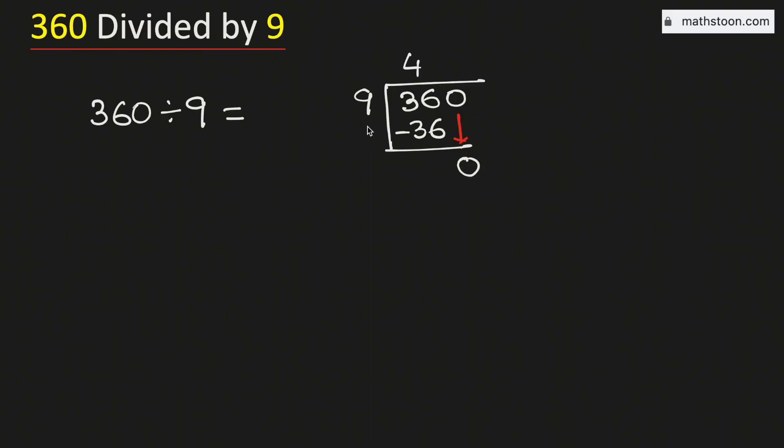But in this case, although 0 is less than 9, as we have brought down this number 0 here, we need to divide it. From the multiplication table of 9, we know that 9 times 0 is 0. Subtract, we get 0.